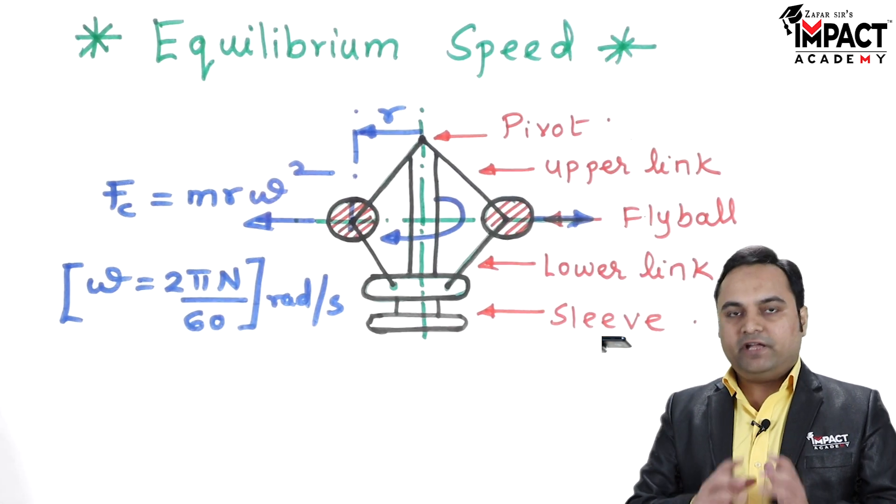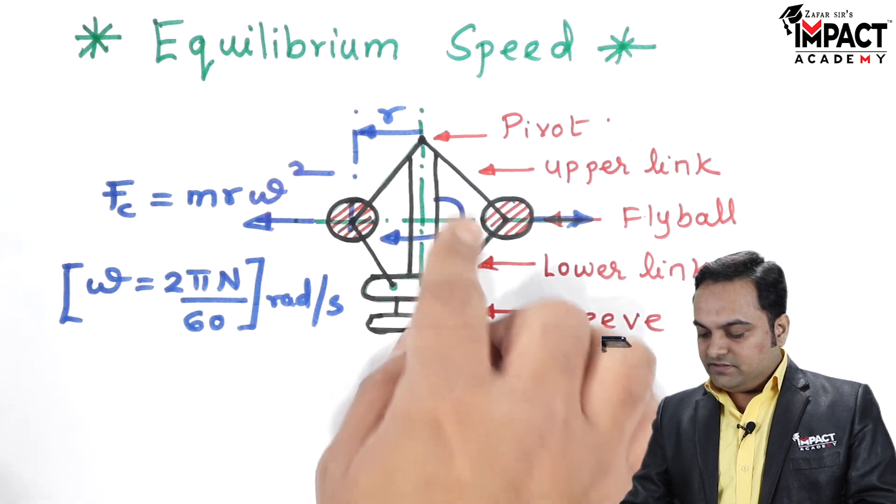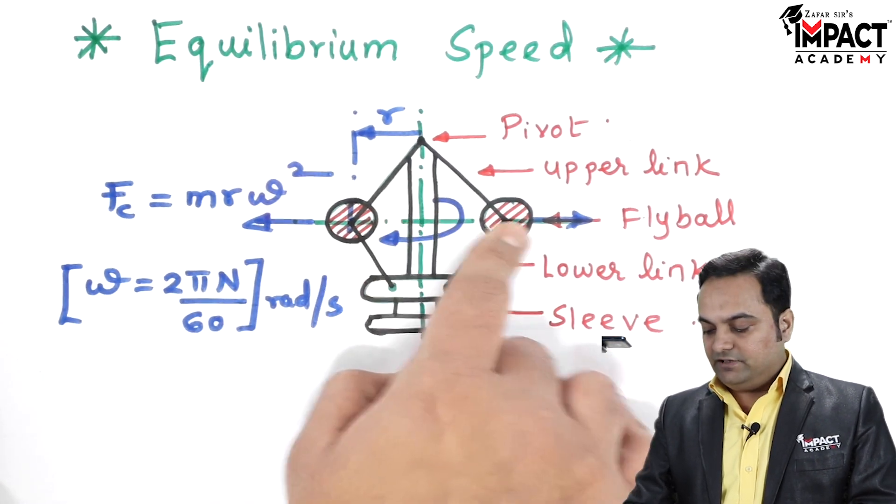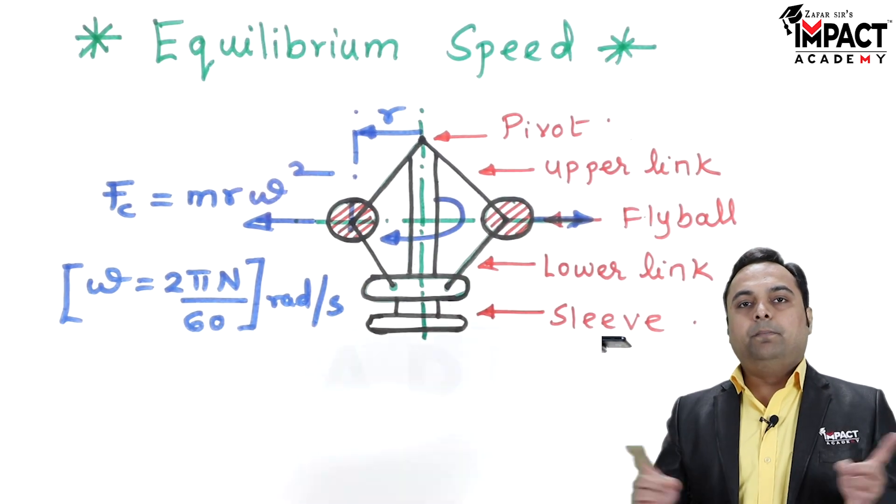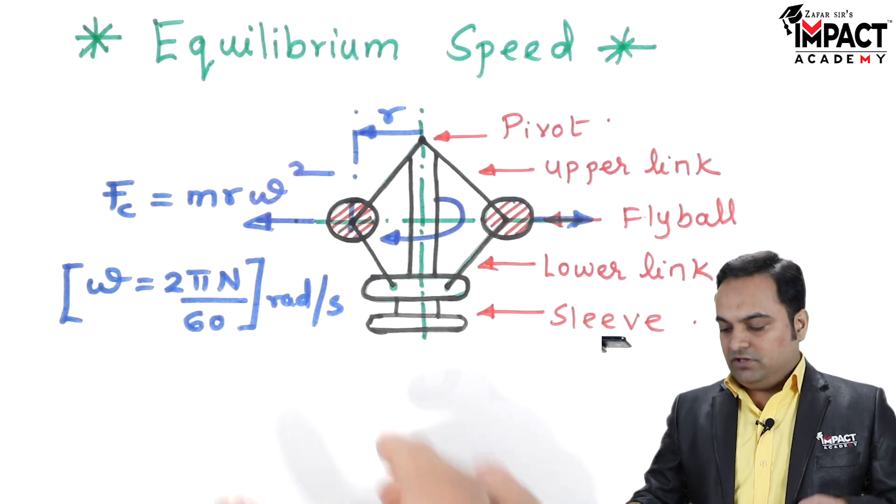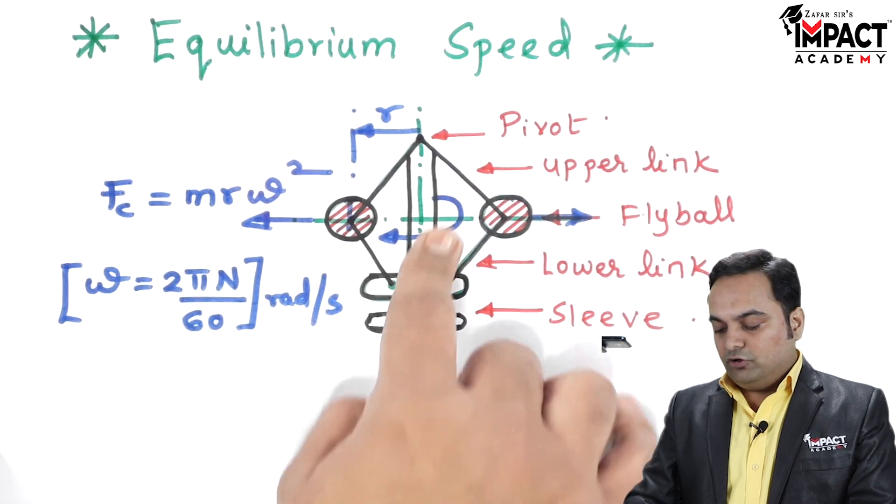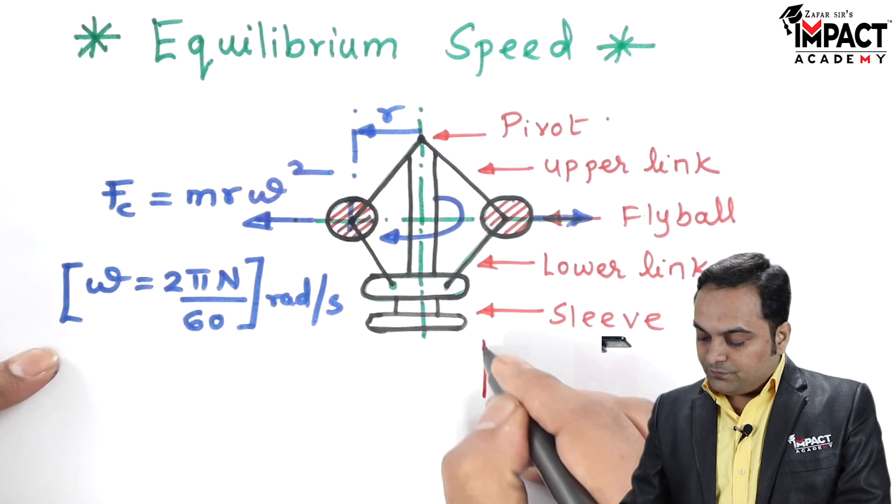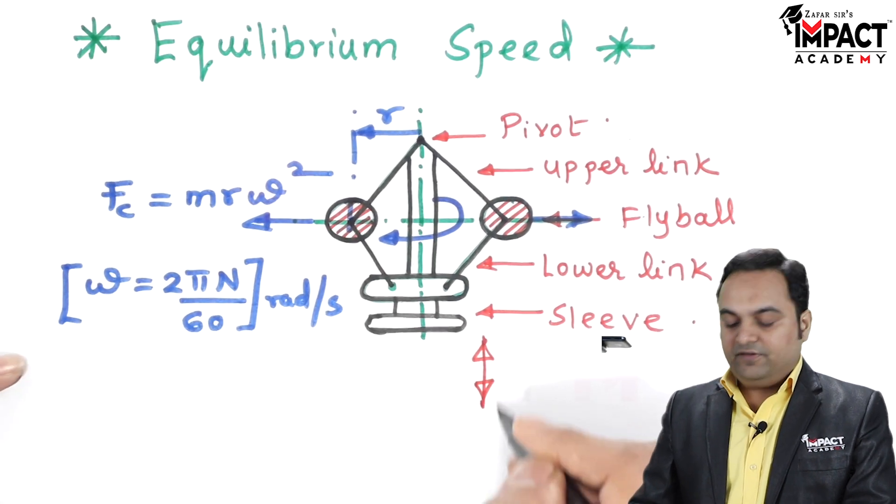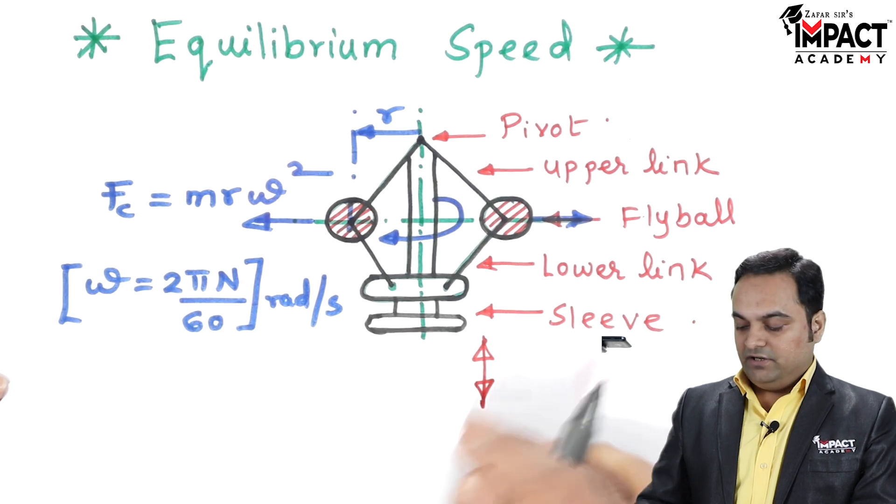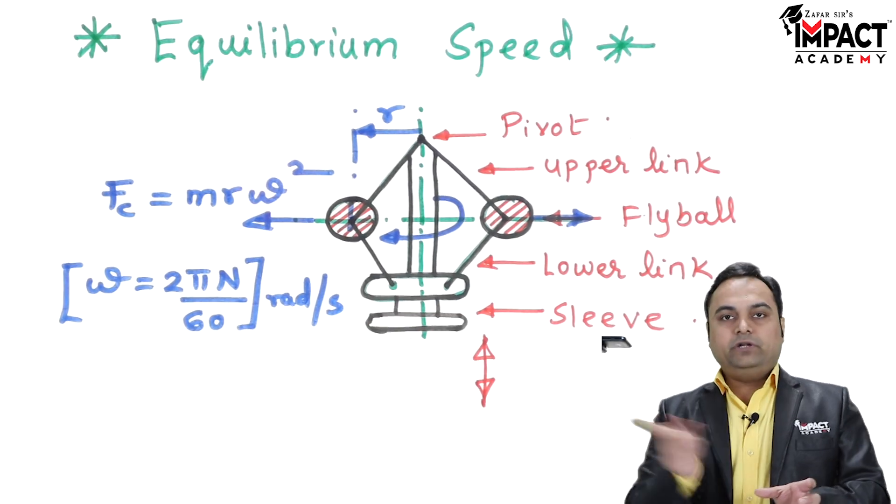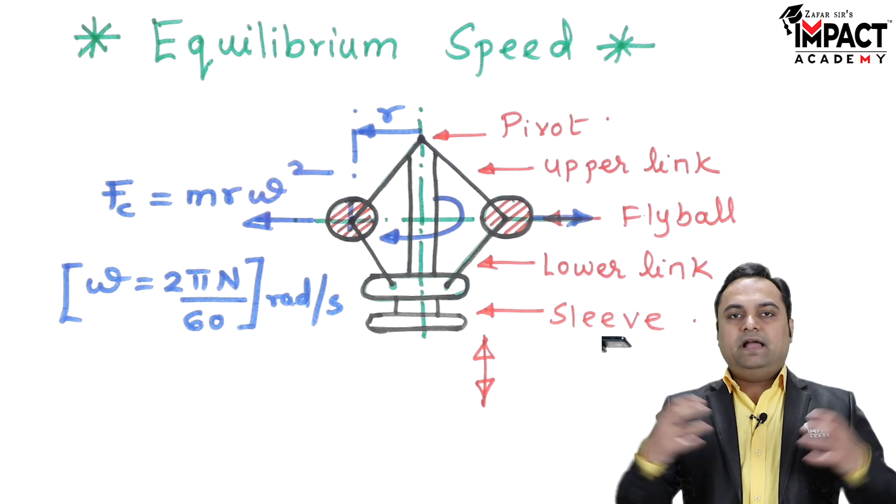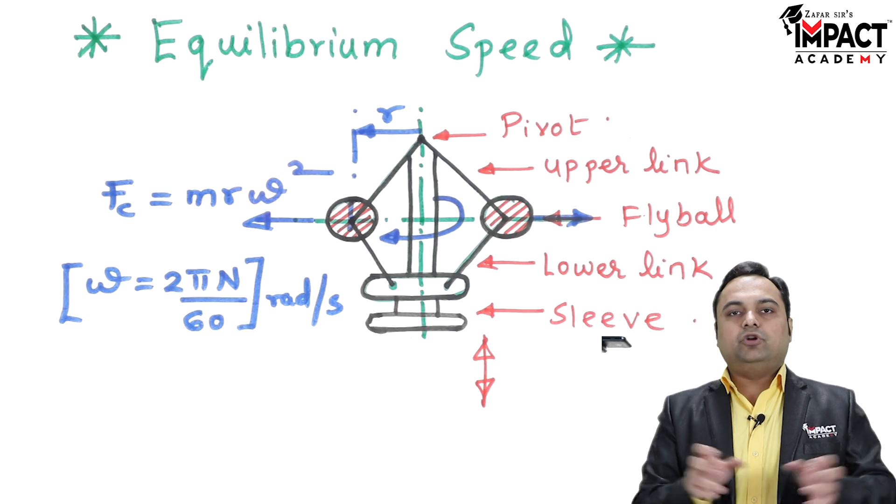Equilibrium speed in short is that angular speed of the governor at which the fly balls are rotating but the radius is fixed. The radius won't be changing and the sleeve won't be moving up and down. If the sleeve is just rotating at a particular distance not moving up and down, and the fly balls are also rotating and the radius is not changing...